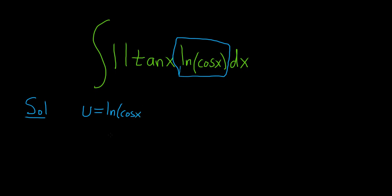So u equals ln(cos x). Let's find du. The derivative of ln(x) is 1/x. So here, it's 1/cos(x) times the derivative of the inside piece. The inside piece is cosine, and its derivative is negative sine x, then we have dx.